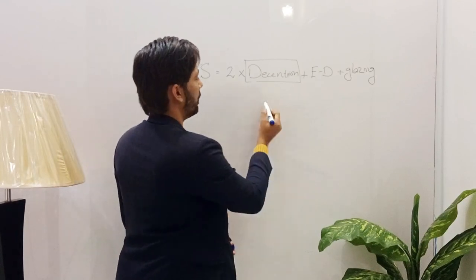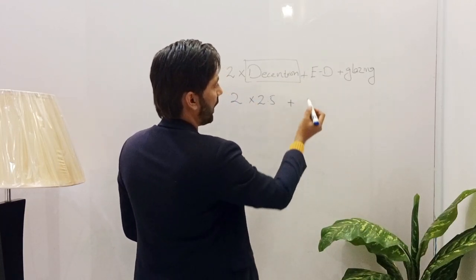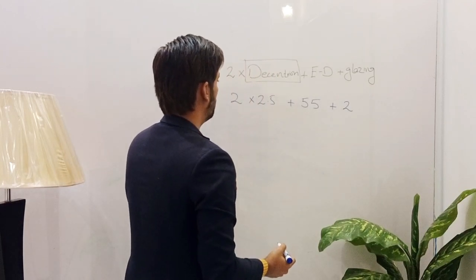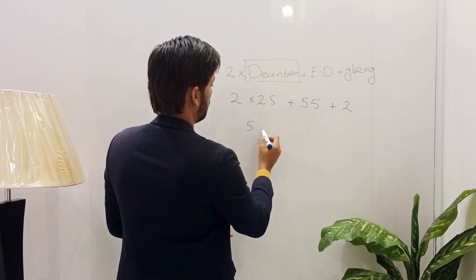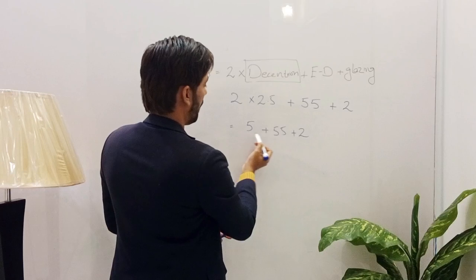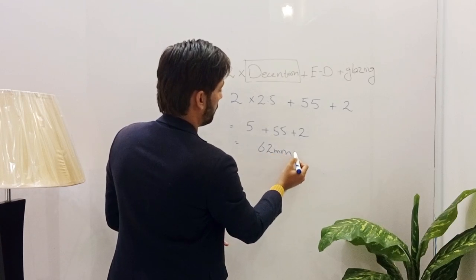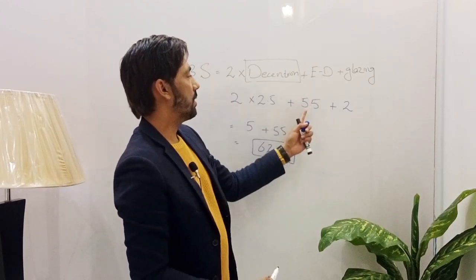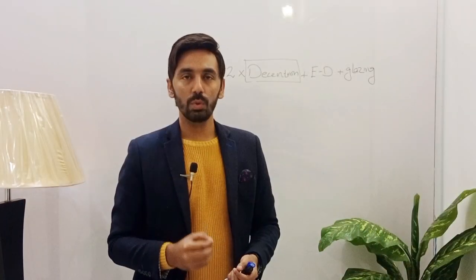Our decentration was 2.5 mm. Applying the formula: 2 × decentration + effective diameter + glazing. With effective diameter = 55 mm and glazing = 2 mm: 2 × 2.5 = 5, plus 55 = 60, plus 2 = 62 mm. So the minimum blank size is 62 mm when the effective diameter is 55 mm.